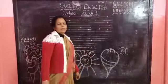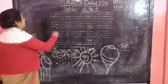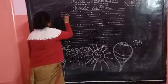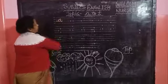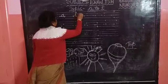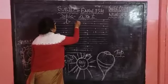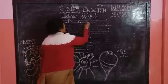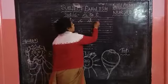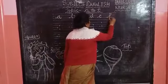Now you see how to write. Small A, small B, small C, small D, small E, small F.